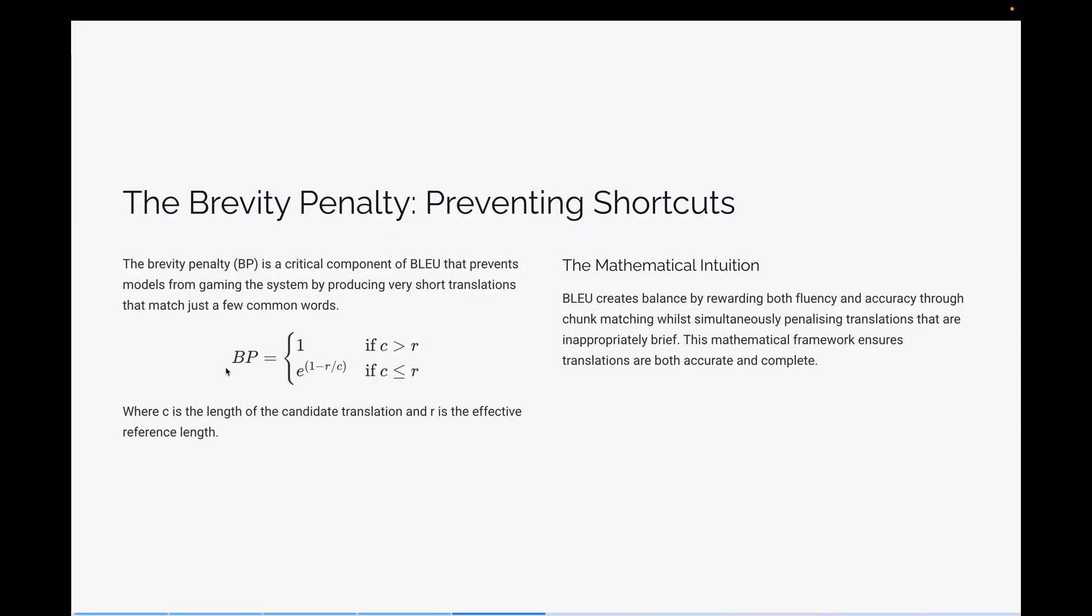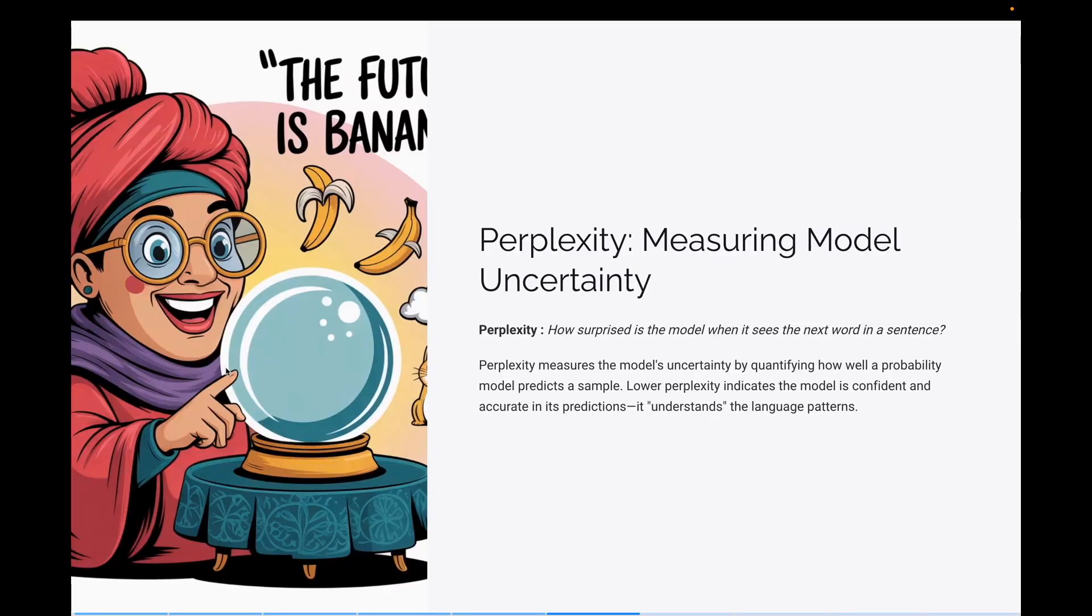So if the translation produced by machine is very small, it will basically penalize it, as simple as that. Now let's talk about the perplexity score.